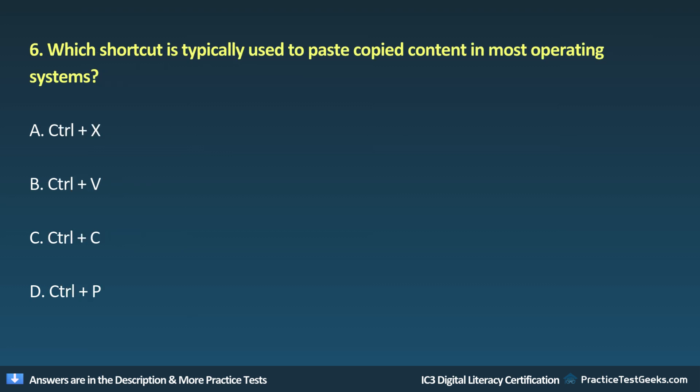Question 6: Which shortcut is typically used to paste copied content in most operating systems? A. Ctrl+X. B. Ctrl+V. C. Ctrl+C. D. Ctrl+P.